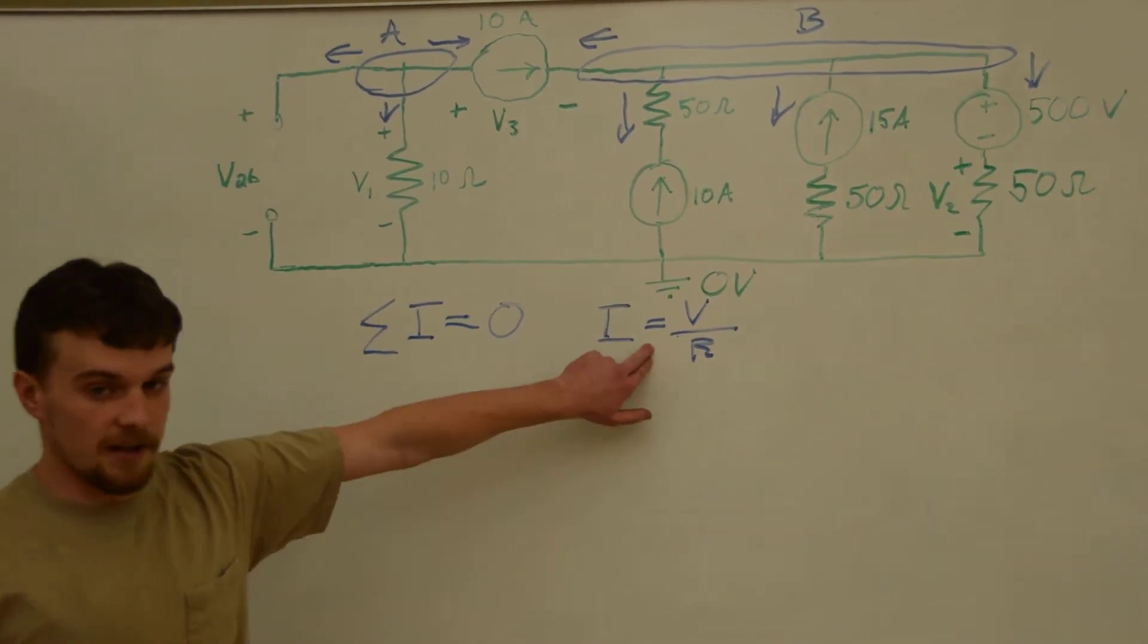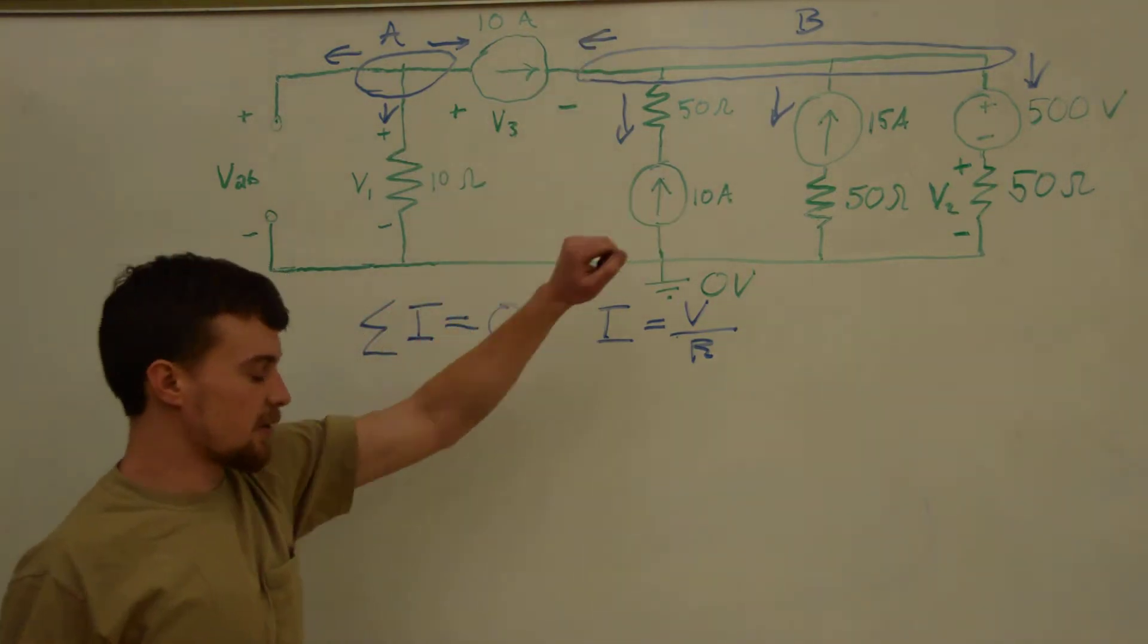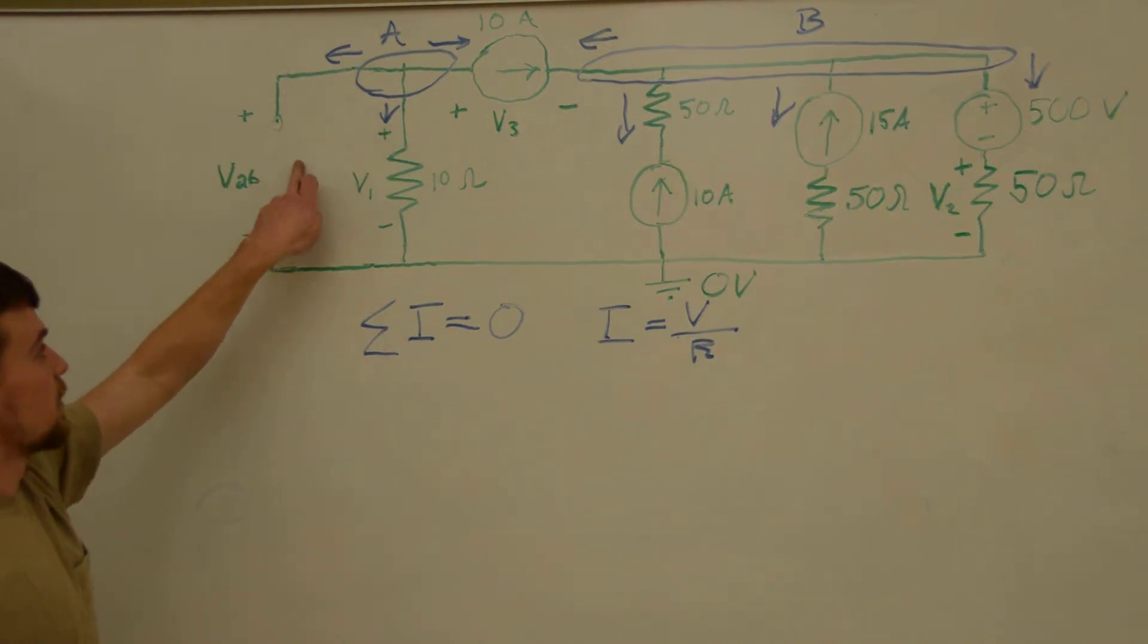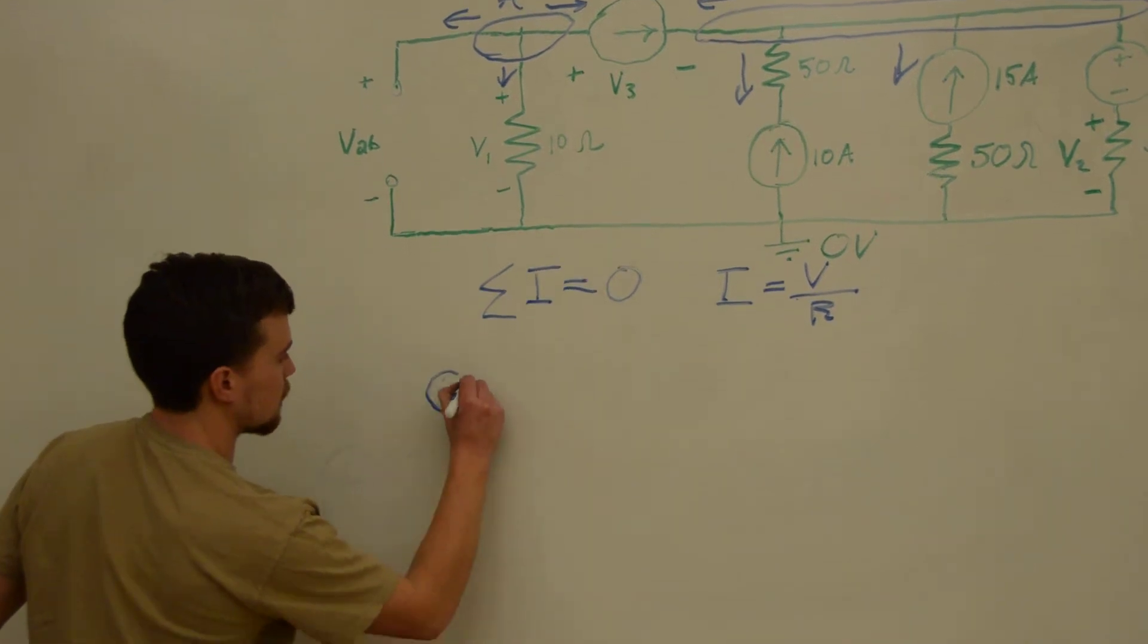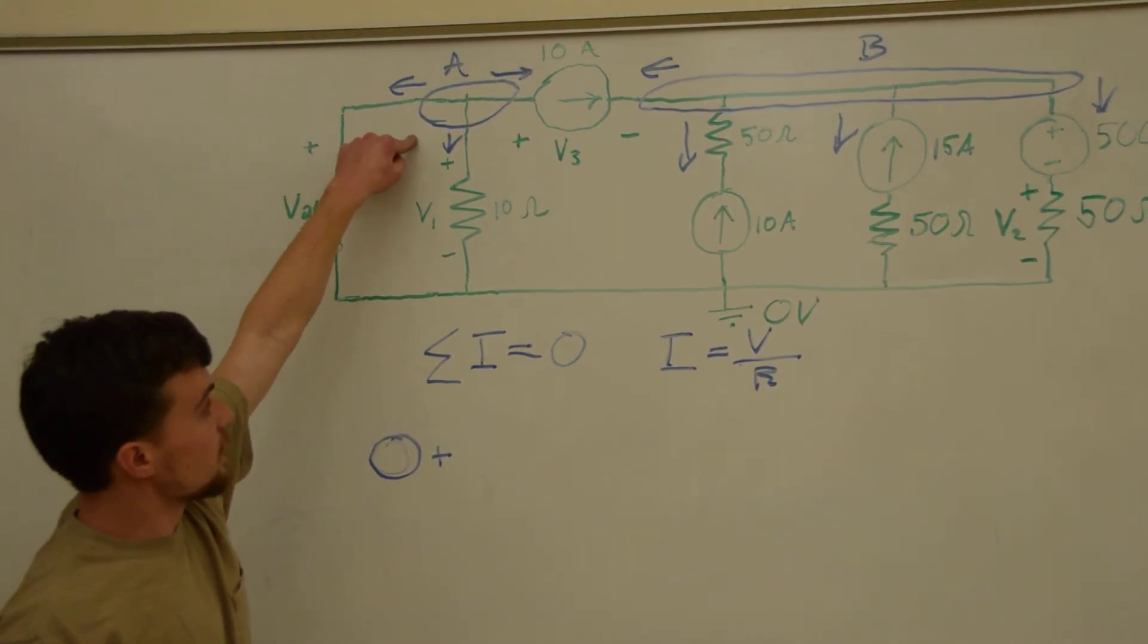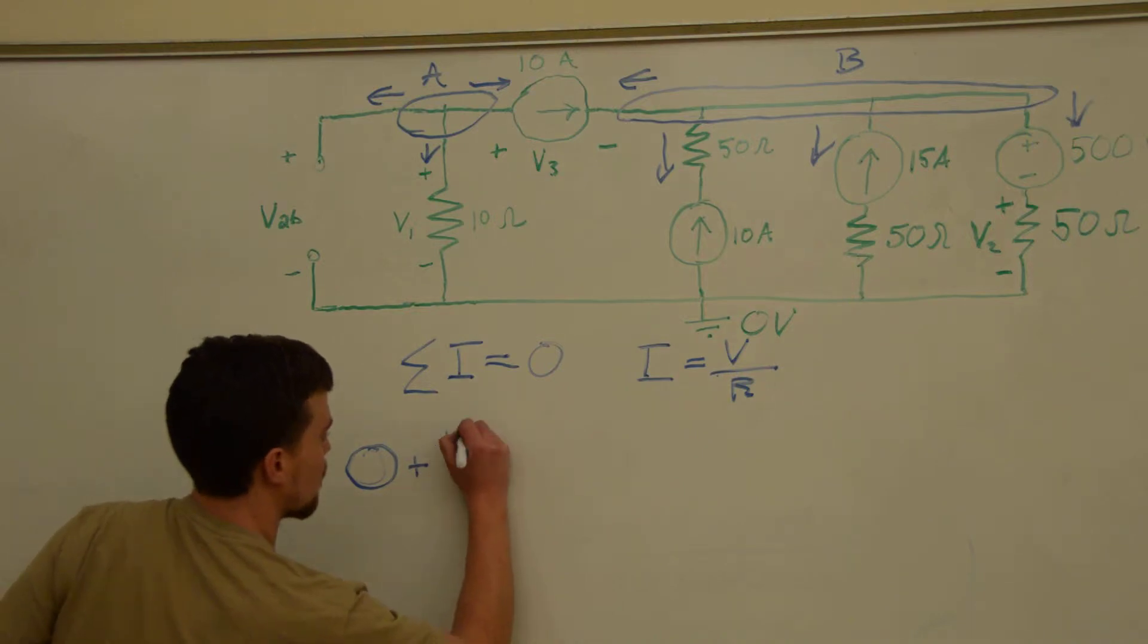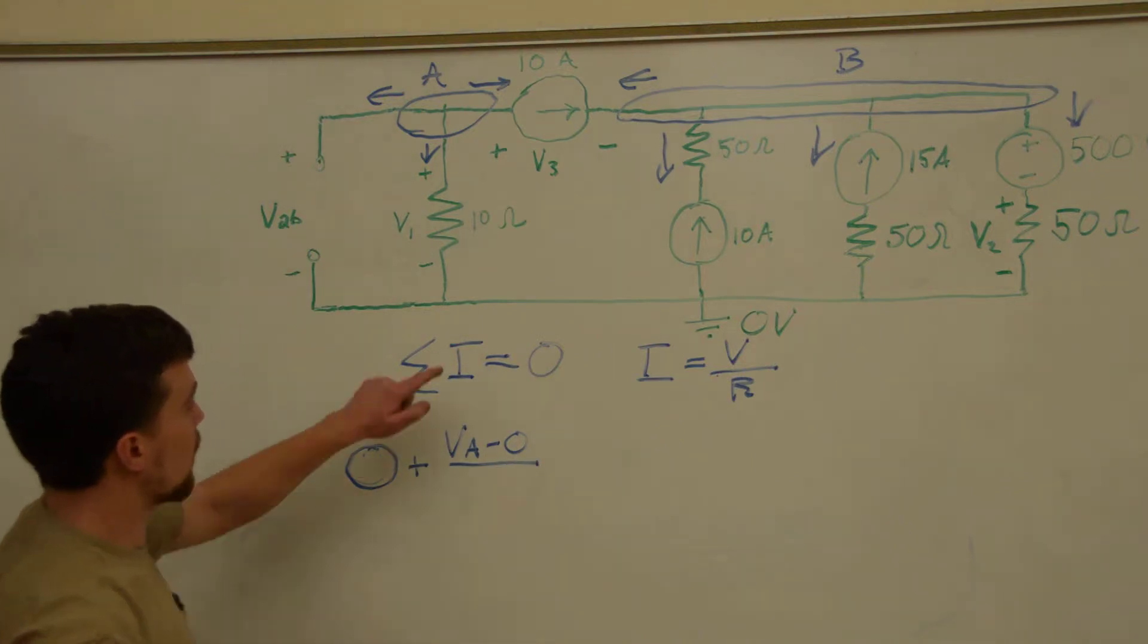Now, using this we can get these currents in terms of our unknown voltages and resistor values. So, we'll start at this node. This current, as we mentioned before, is zero. No current can flow through that gap. Next, this current is the voltage of this node minus the voltage of that node divided by this resistor value. So, we have VA minus zero volts, all that over ten ohms.